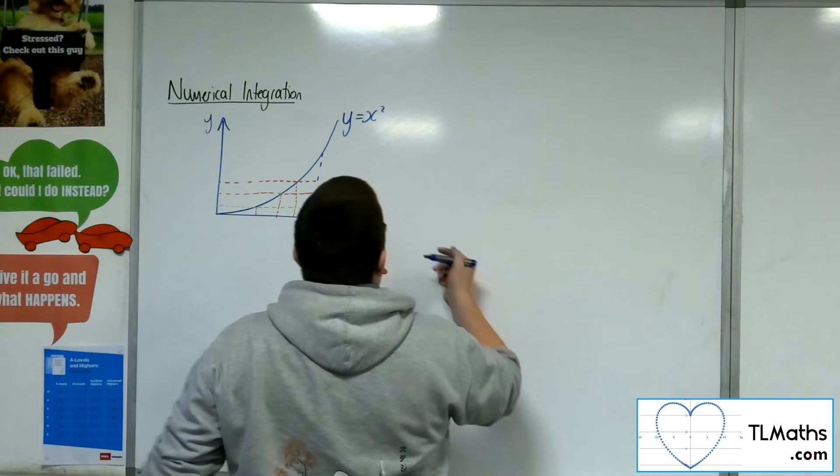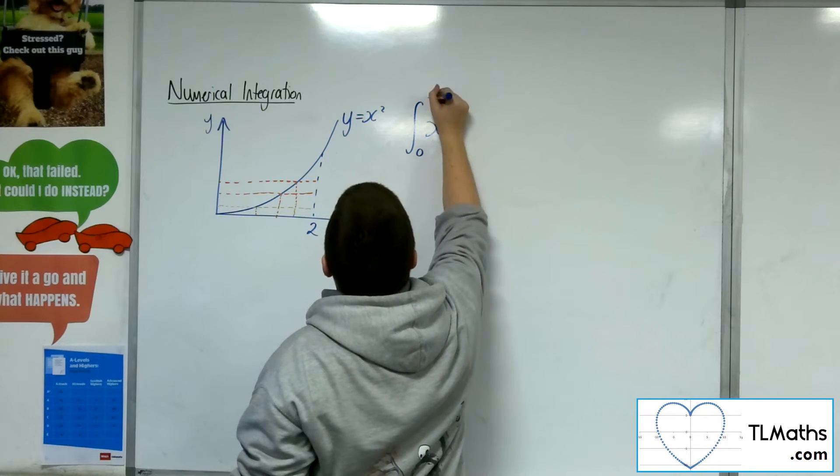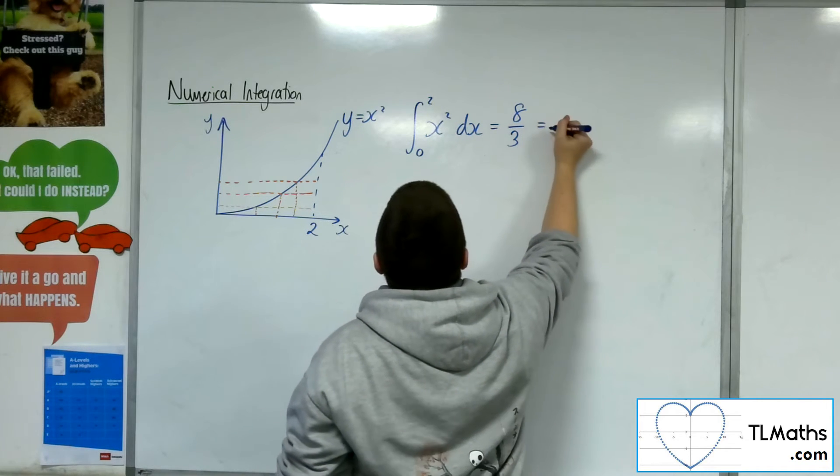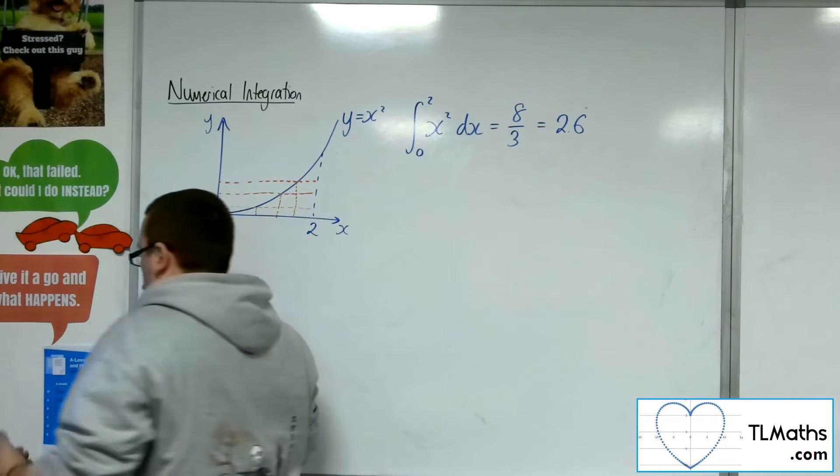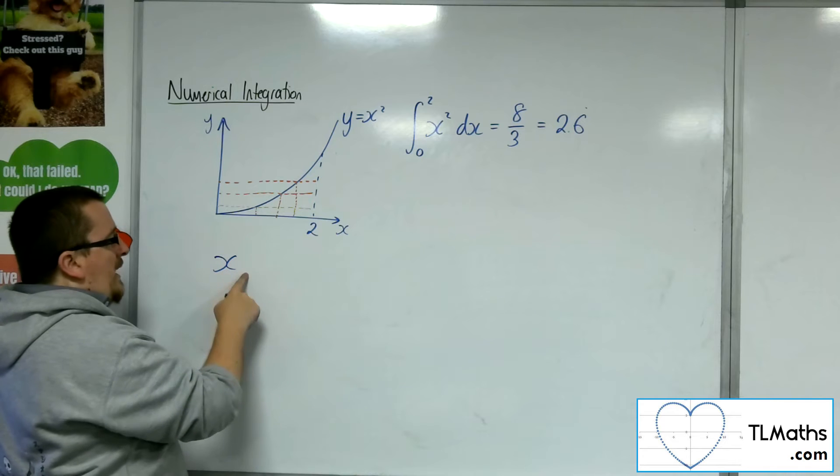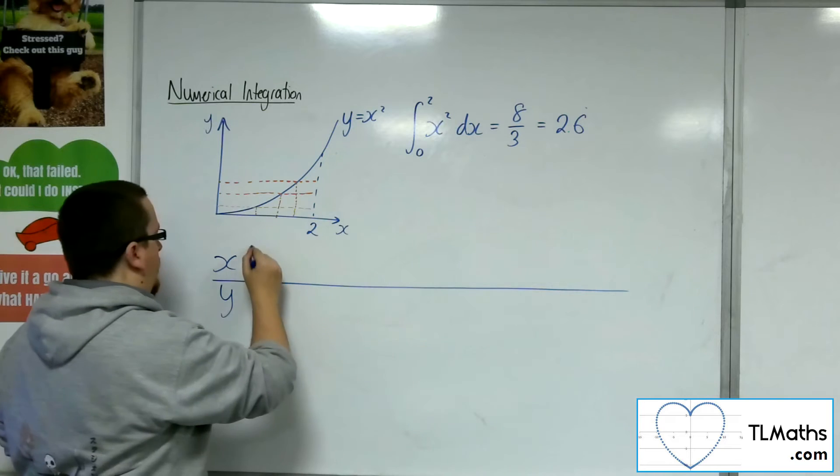So the integral that we're actually looking at is the integral of X squared between 0 and 2. And that's actually 8 thirds, so that's 2.6 recurring. So what we're going to do is try some values out. We're going to pick some X values and get the Y values from that.